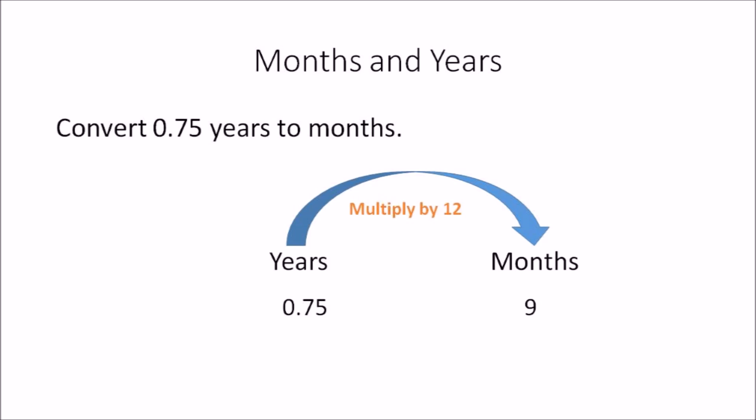In this example, convert 0.75 years to months. Again you're converting years to months, and all you need to do is multiply the amount you have in years by 12. So 0.75 multiplied by 12 will give you 9, so the answer is 9 months.